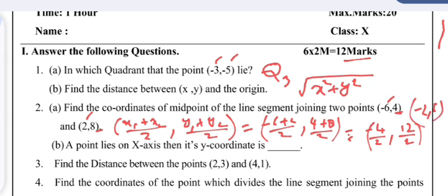Question 4: A point lies on the x-axis, then its y-coordinate is 0. Question 5: Find the distance between the points (2, 3) and (4, −1). The distance formula is √((x₂ − x₁)² + (y₂ − y₁)²).